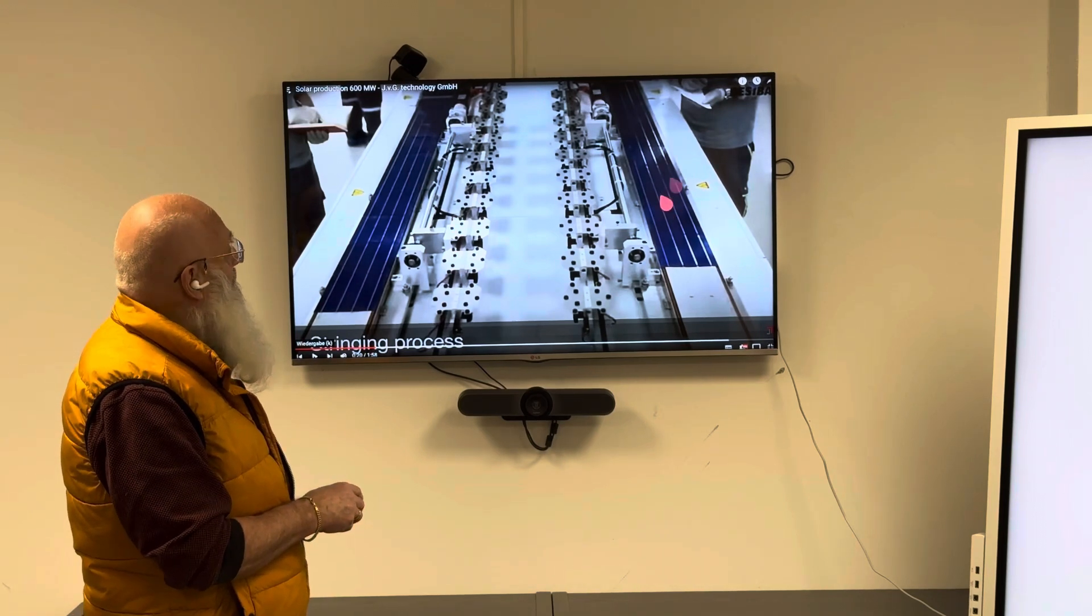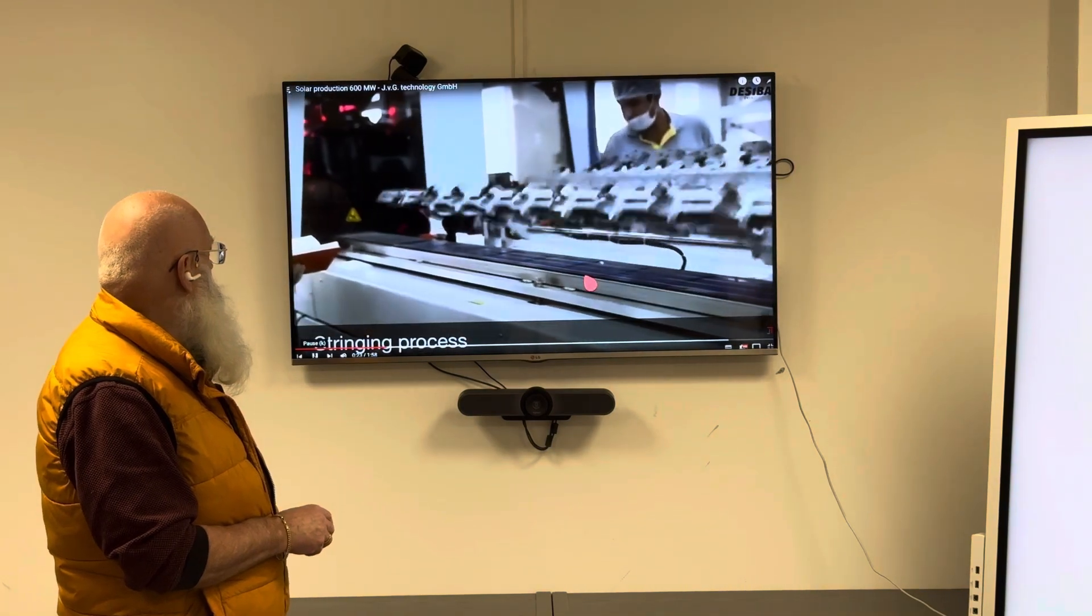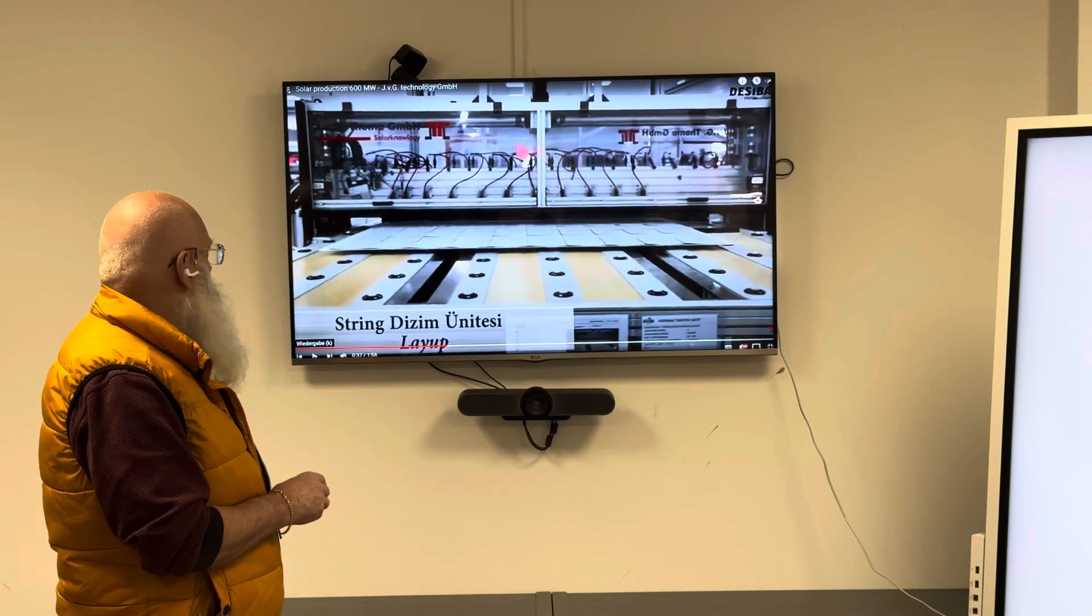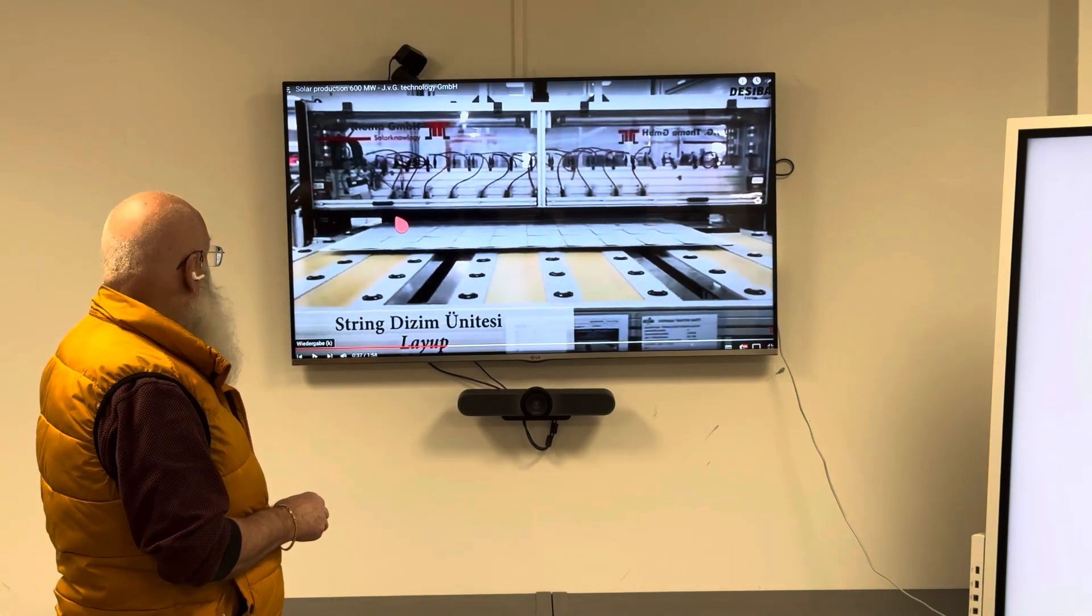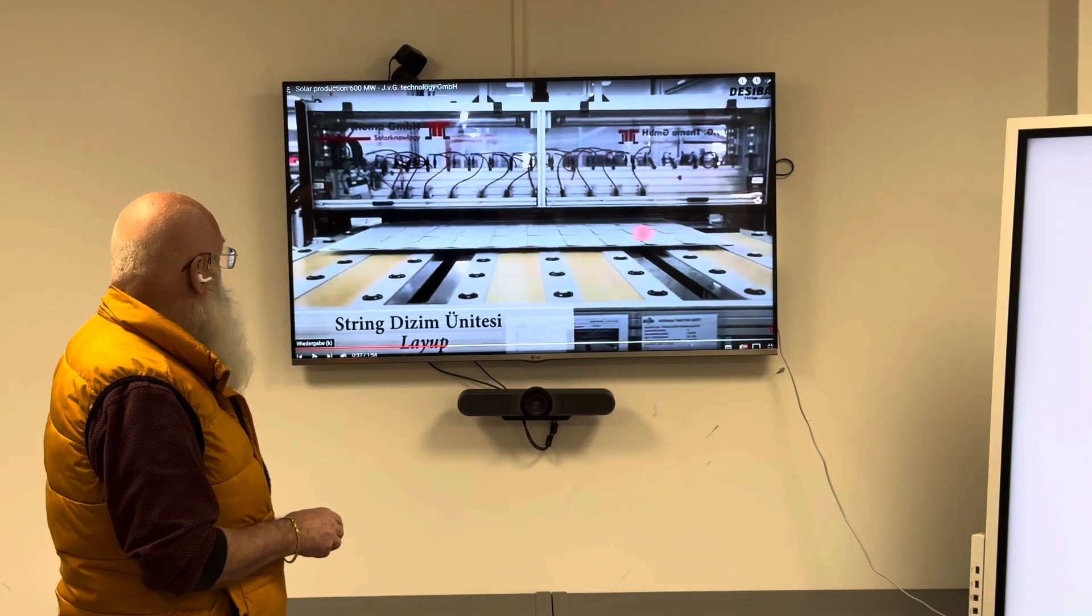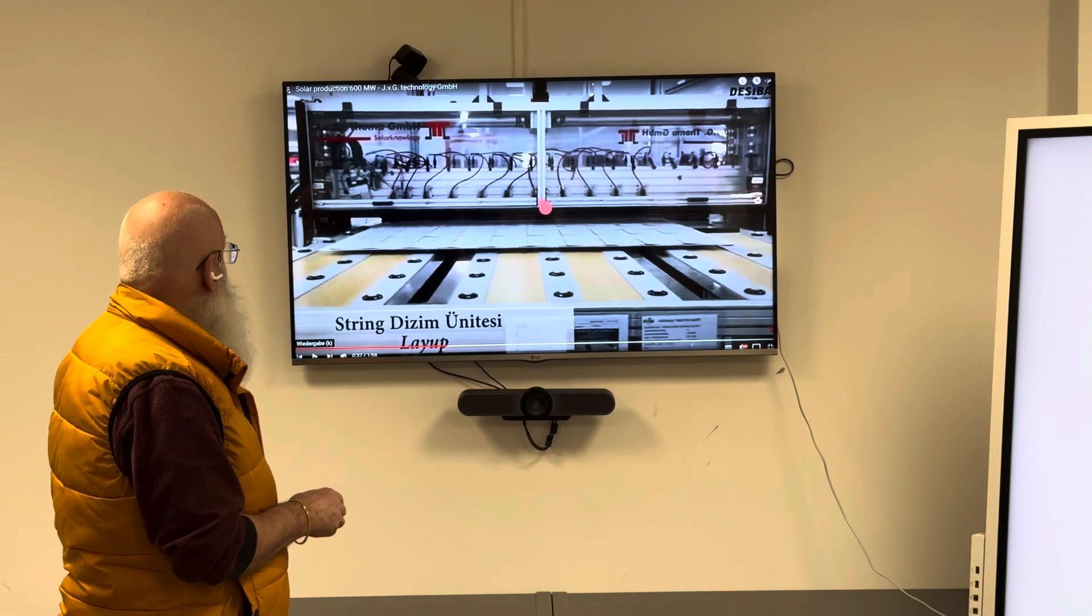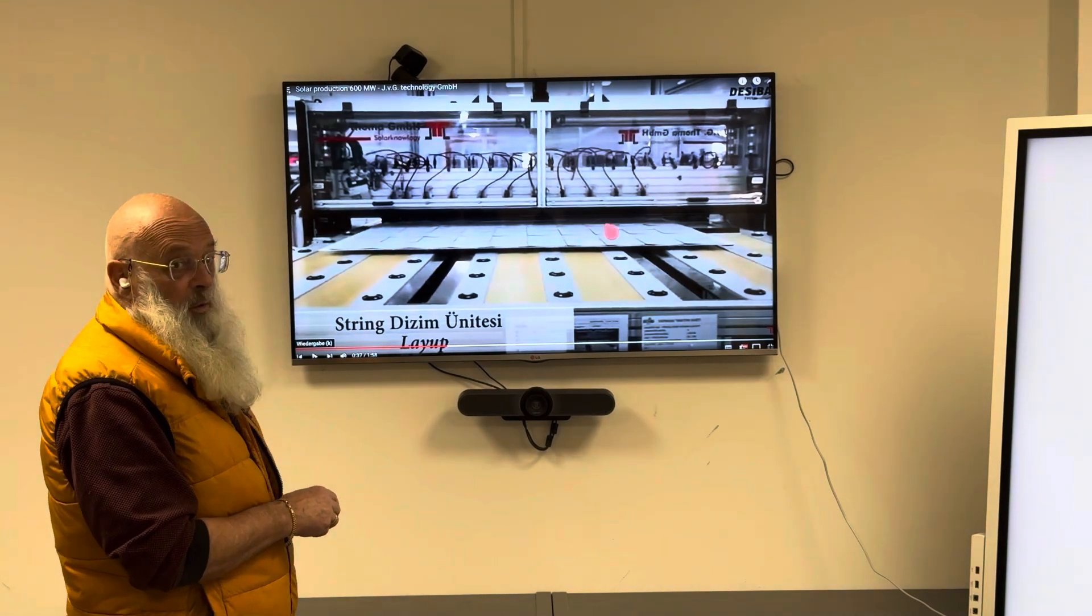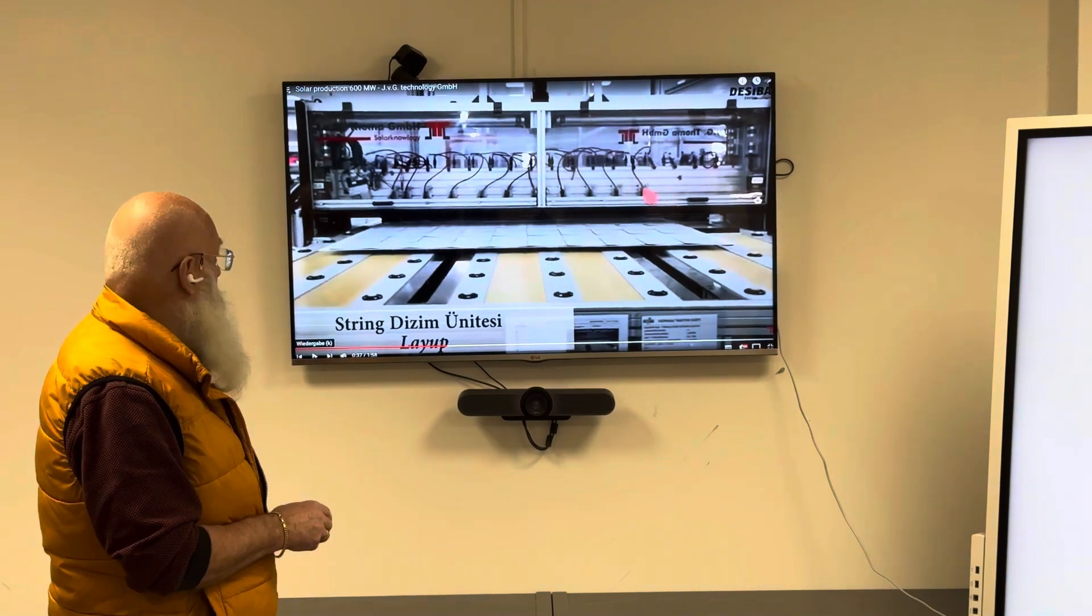This is a layup system made by XYZ and you see string one, string two, four, five, six made by JVG, of course. The capacity of this is maybe 100 megawatt, 50 megawatt, depends on the size of the solar module.